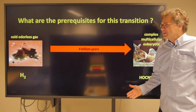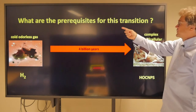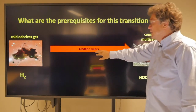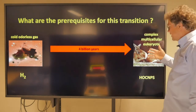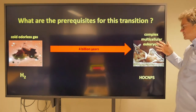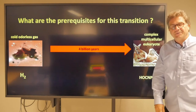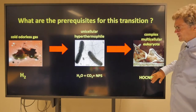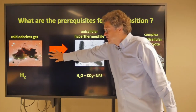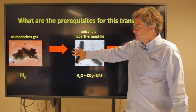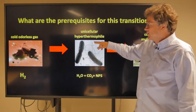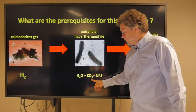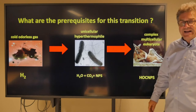So the question we want to ask is: what are the prerequisites for this transition from a cold, odorless gas, 4 billion years later, to have a kangaroo, a complex, multicellular eukaryote? In between, there's a transition to a unicellular hypothermophile, probably. We need water, we need CO2, and we need nitrogen, phosphorus, and sulfur.